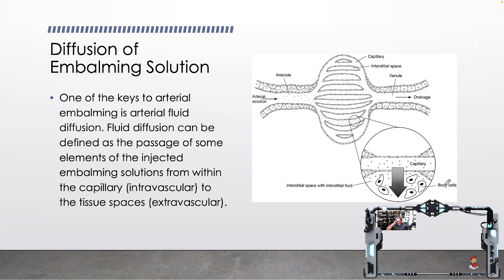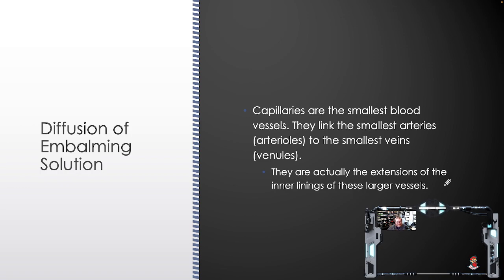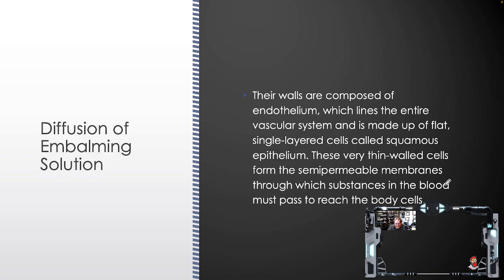One of the keys to arterial embalming is arterial fluid diffusion. Fluid diffusion can be defined as the passage of some elements of the injected embalming solutions from within the capillary — intravascular — to the tissue spaces — the extravascular. Capillaries are the smallest blood vessels, linking the smallest arteries (arterioles) to the smallest veins (venules). They are actually extensions of the inner linings of these larger vessels — as the artery gets smaller it becomes an arteriole, the outer wall basically disappears leaving only the innermost wall. These thin-walled cells form the semi-permeable membranes through which substances in the blood must pass to reach the body cells. In the living body, blood does not have direct contact with body cells; blood nutrients and oxygen must pass through the walls of the capillaries into the interstitial fluid — the same movement occurs in embalming.